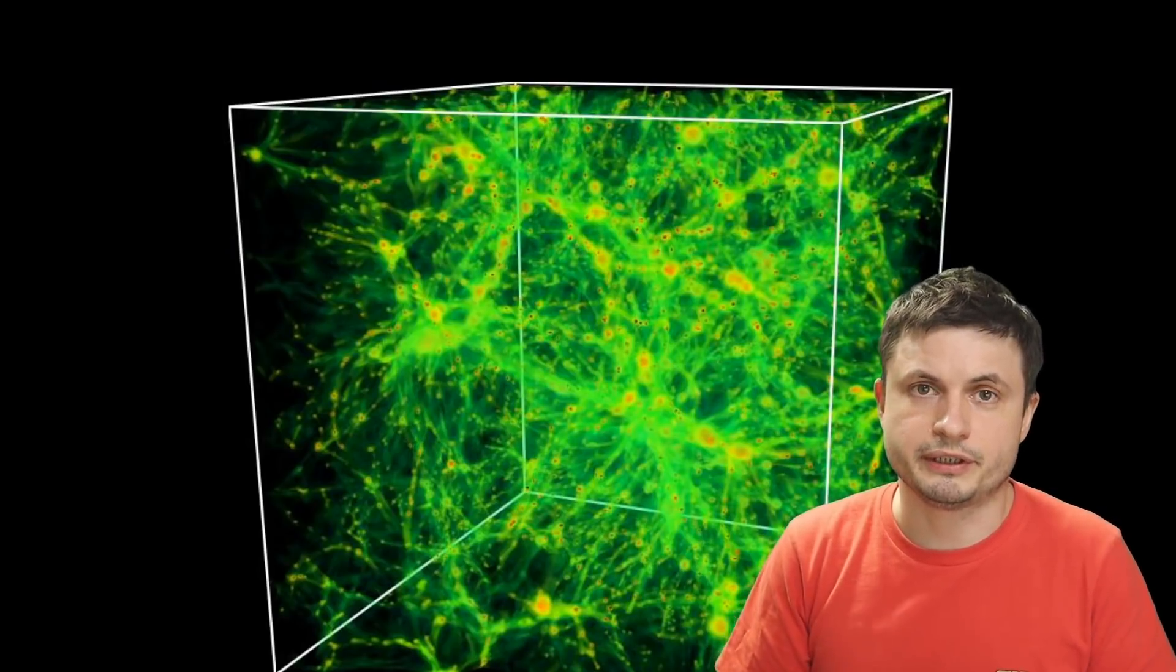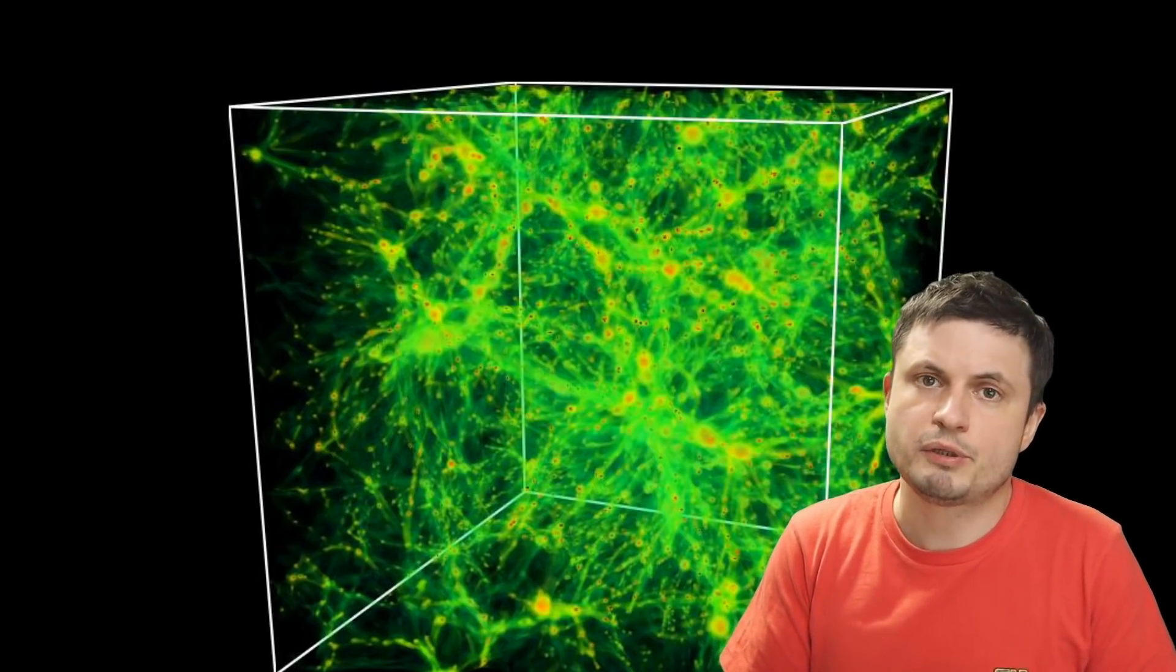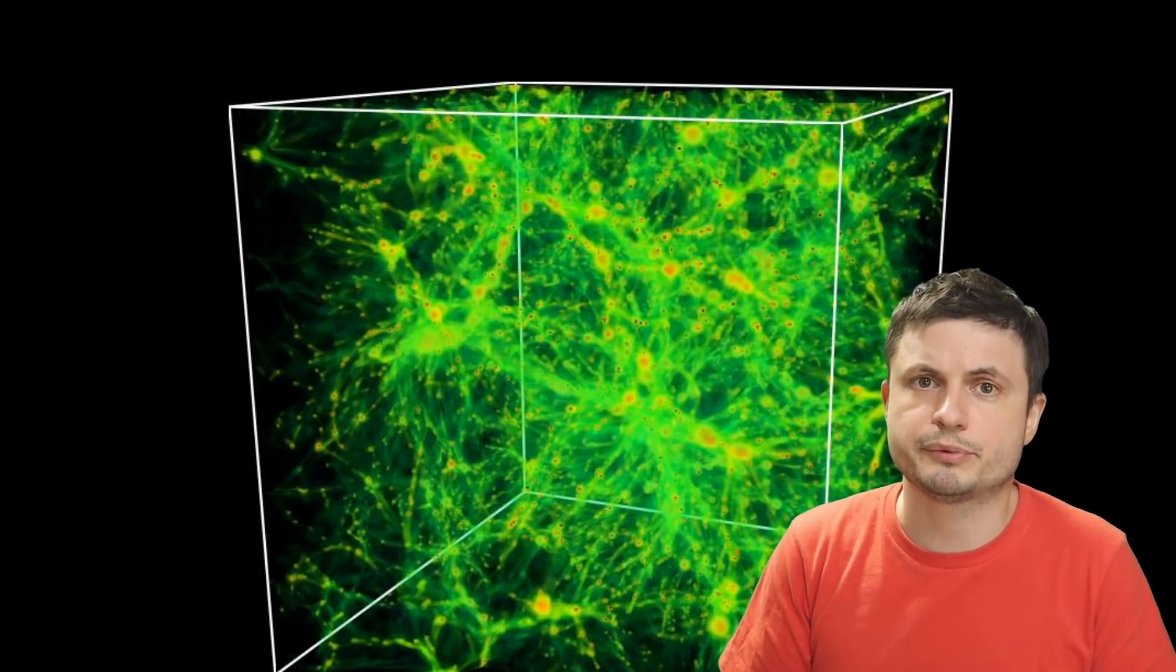In other words, this cosmic web, this huge structure is absolutely crucial for not just the existence of different galaxies, but also for their creation and for guiding their formation across the universe. Without this, our galaxy would not exist at all. But how could we possibly see this? Well, there could be potentially different techniques and the scientists believe that maybe we can actually see this through various gravitational effects, for example.